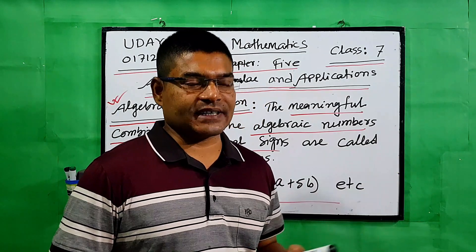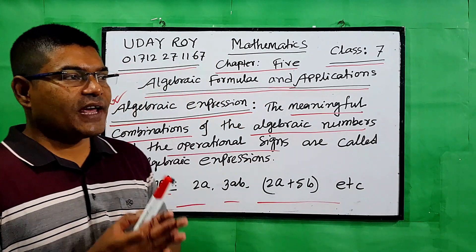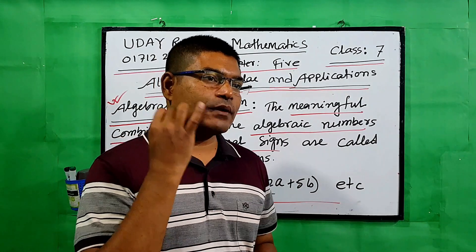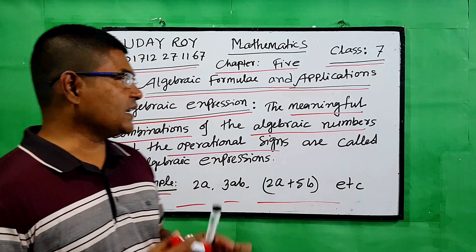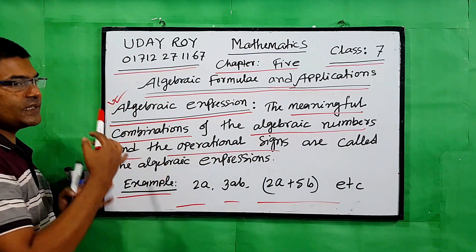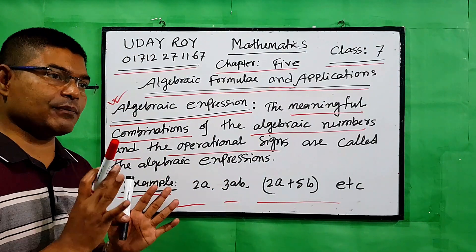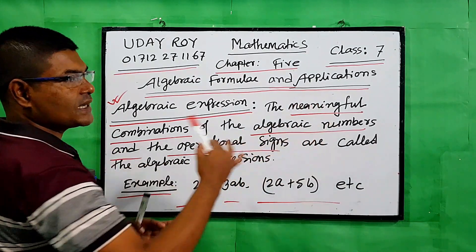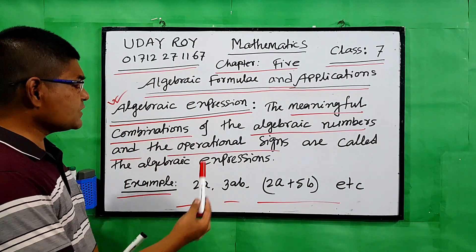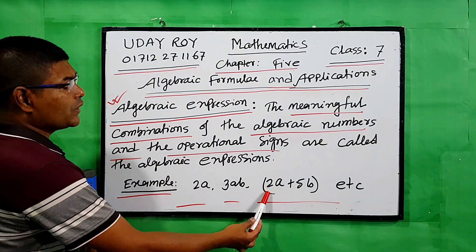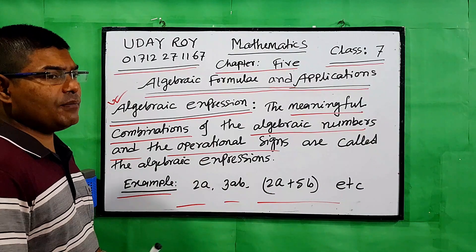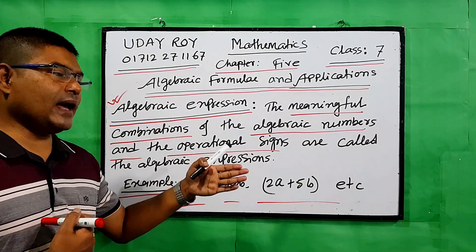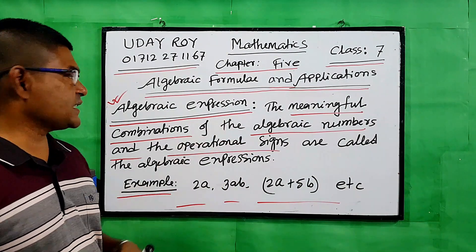You have to know carefully the difference between what is called a formula and what is called an algebraic expression. The meaningful combination of algebraic numbers — such as 2a, 3ab, 2a + 5b — these are algebraic expressions. We need to understand both algebraic formulas and algebraic expressions clearly.